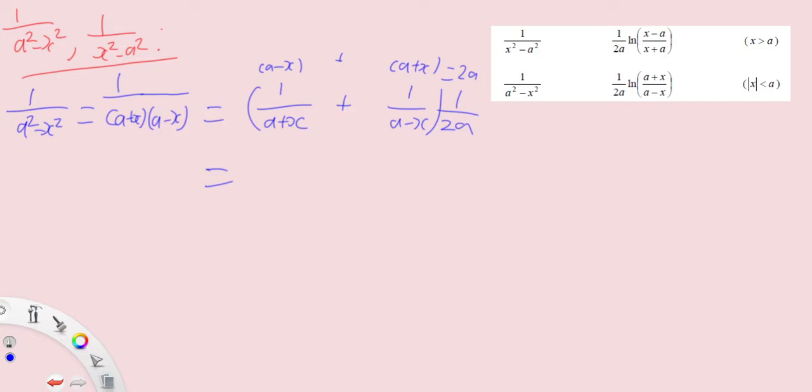So now we integrate with respect to x. 1 over 2a is a constant so I can put it out. Now integrating 1 over a plus x, if you recall it's just simply your logarithm. Then 1 over a minus x. Well the derivative of a minus x is minus 1, therefore the plus sign became a negative sign and I'll get back ln a minus x and then I have a plus c outside.